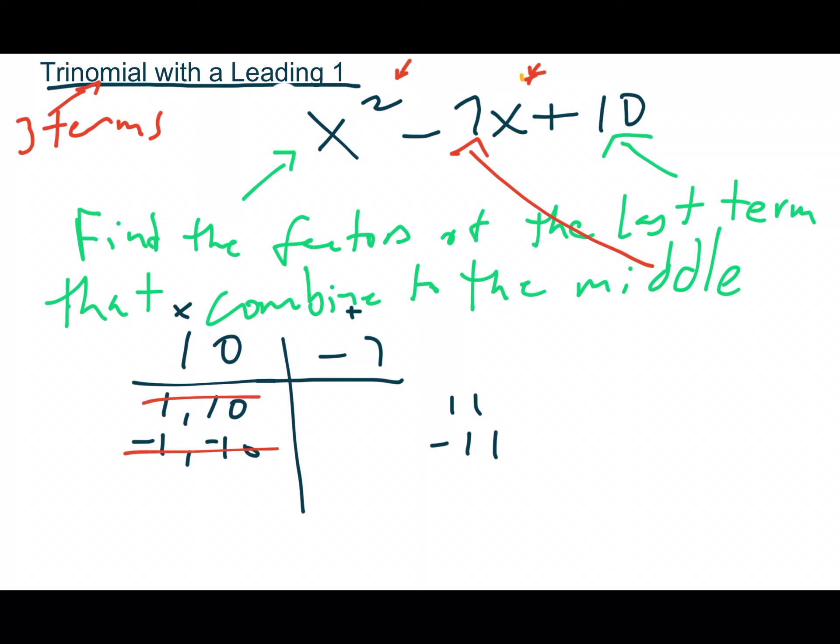My other two factors are 2 and 5. Well, 2 and 5 add up to 7, so I'm on the right track except I need it to be -7. So -2 and -5, that does equal -7. Those are my winners. Here's what I do with them.